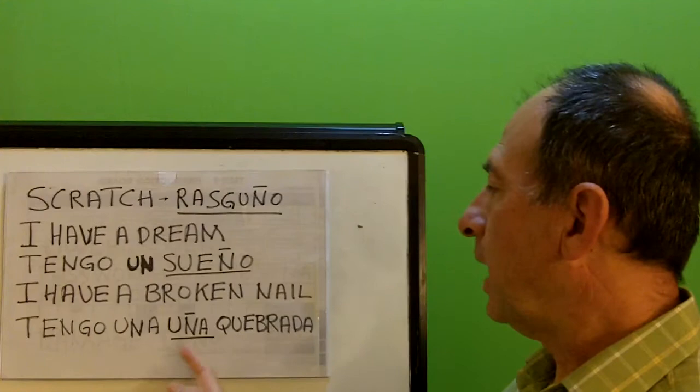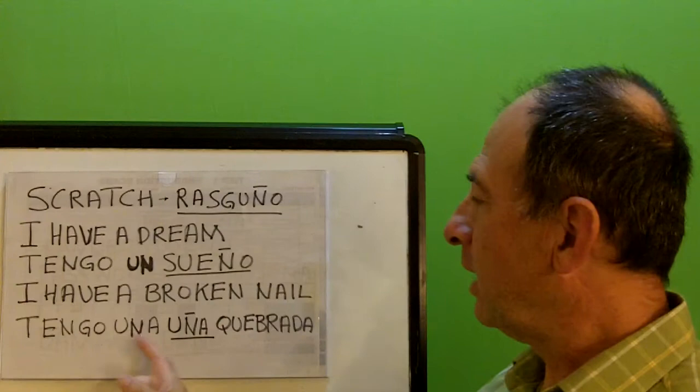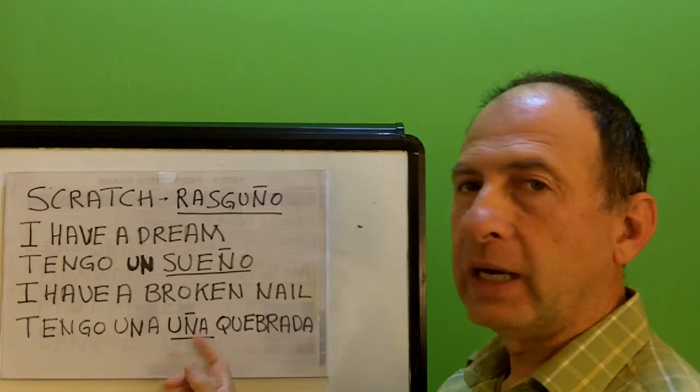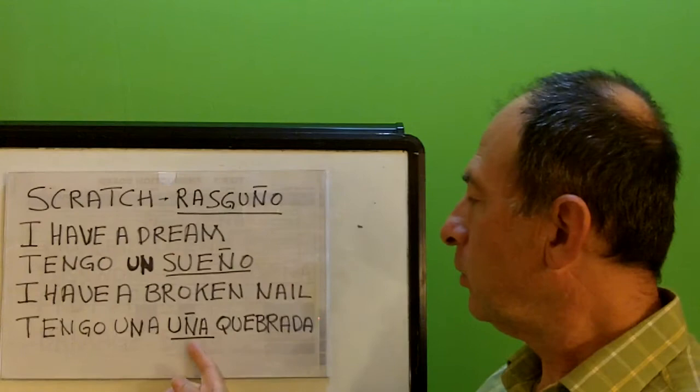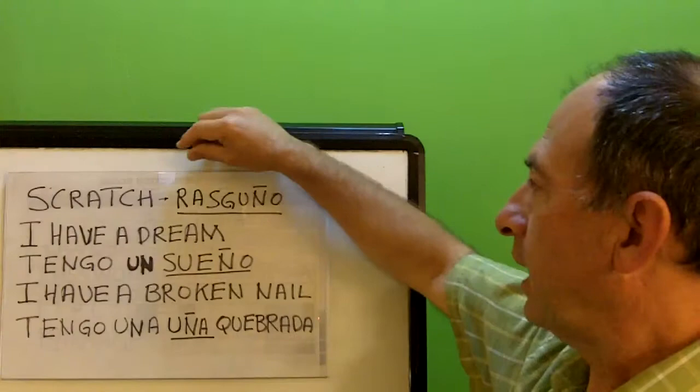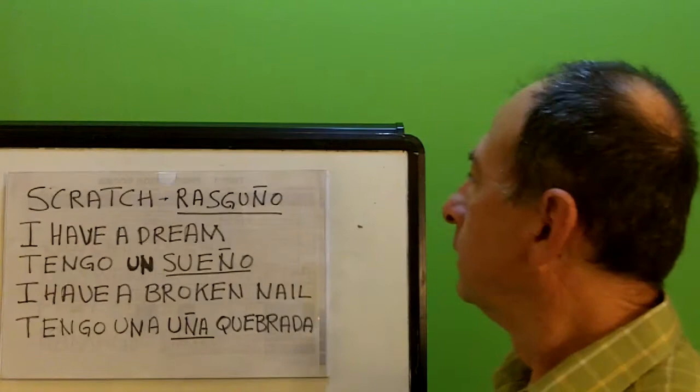I have a broken nail: tengo una uña quebrada. See the difference — una means one, uña means nail. Una uña. Tengo una uña quebrada. They have one broken nail: uña.